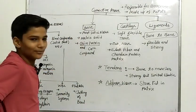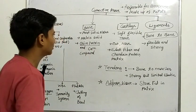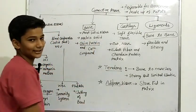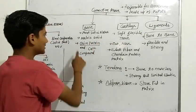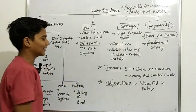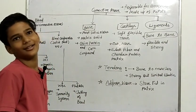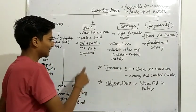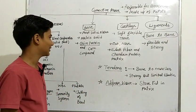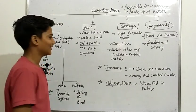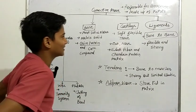Bone is the most solid tissue because its matrix is solid. It contains collagen protein and calcium compounds.